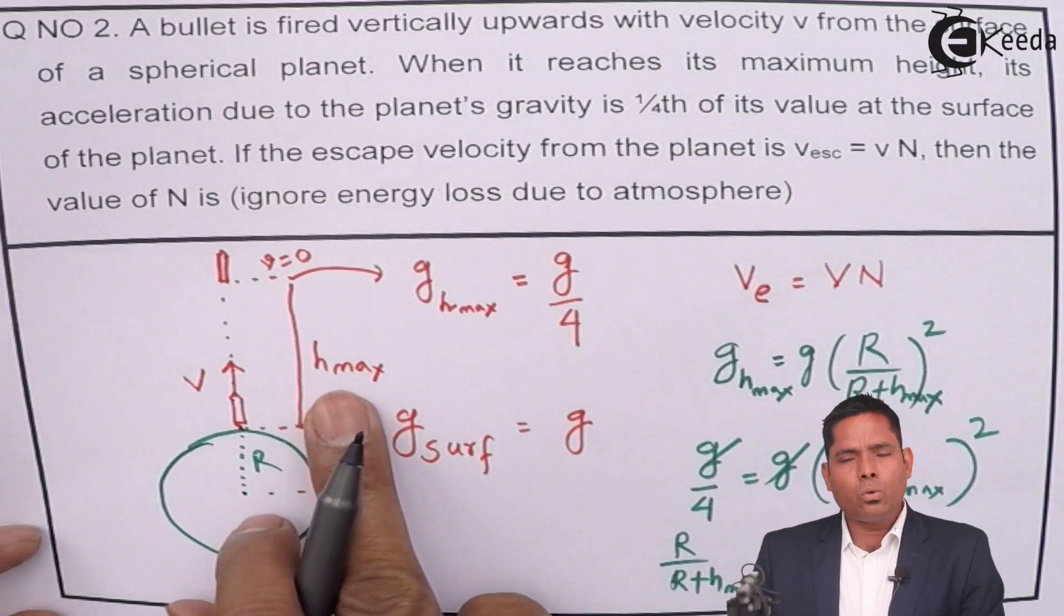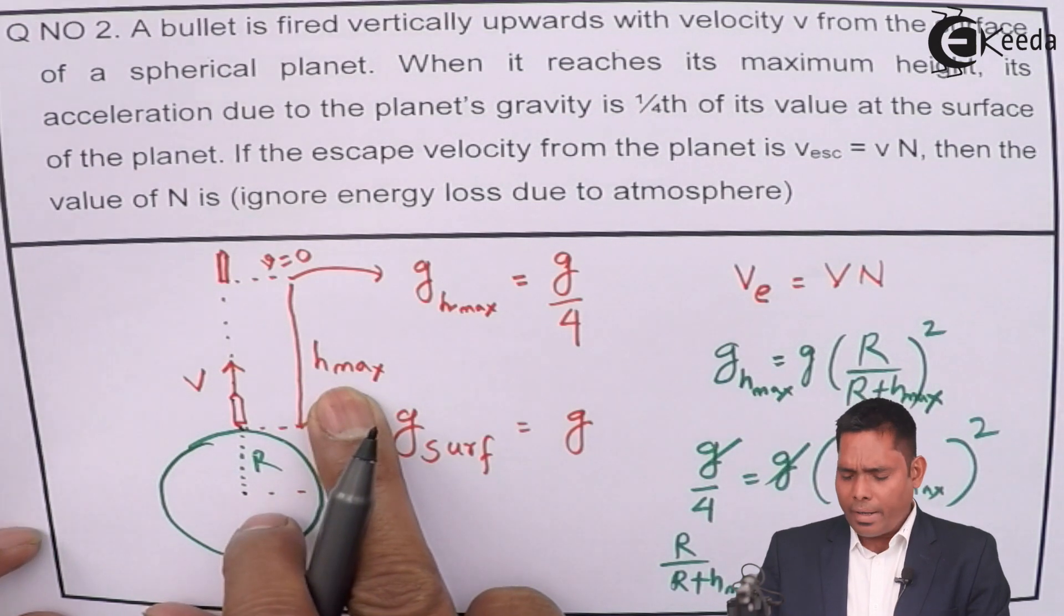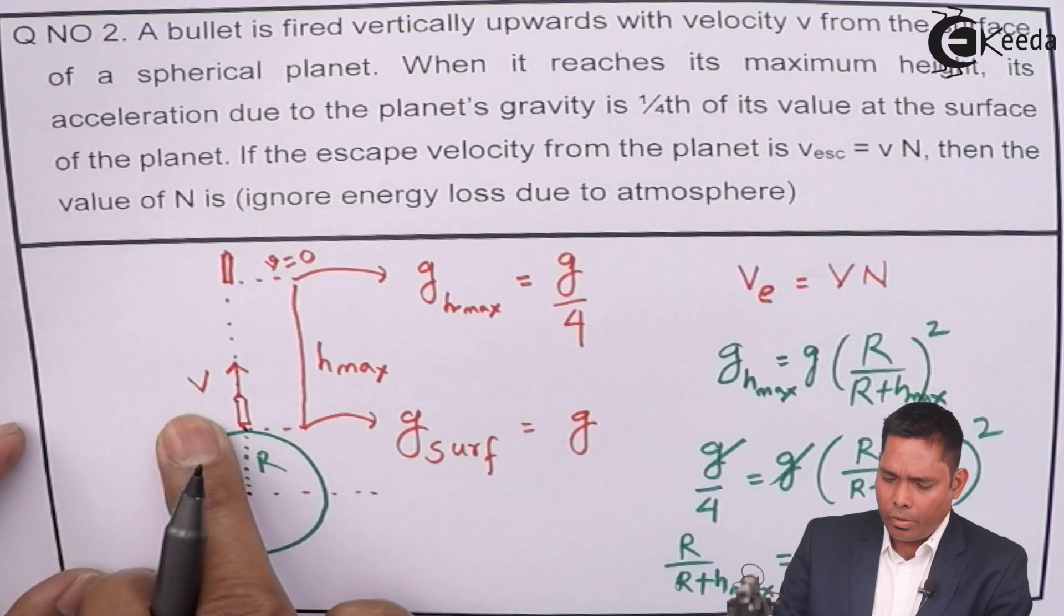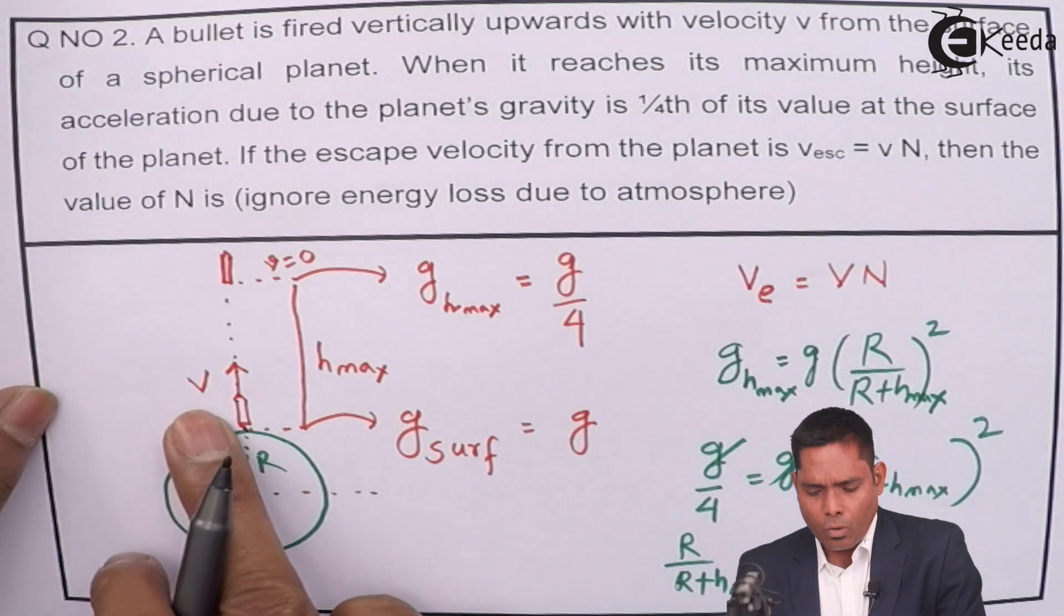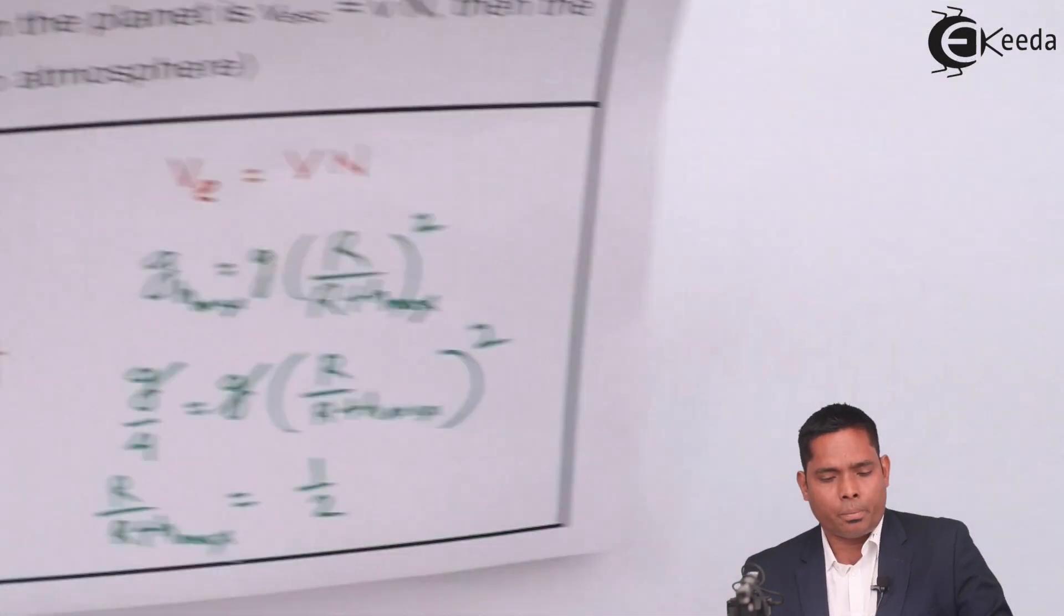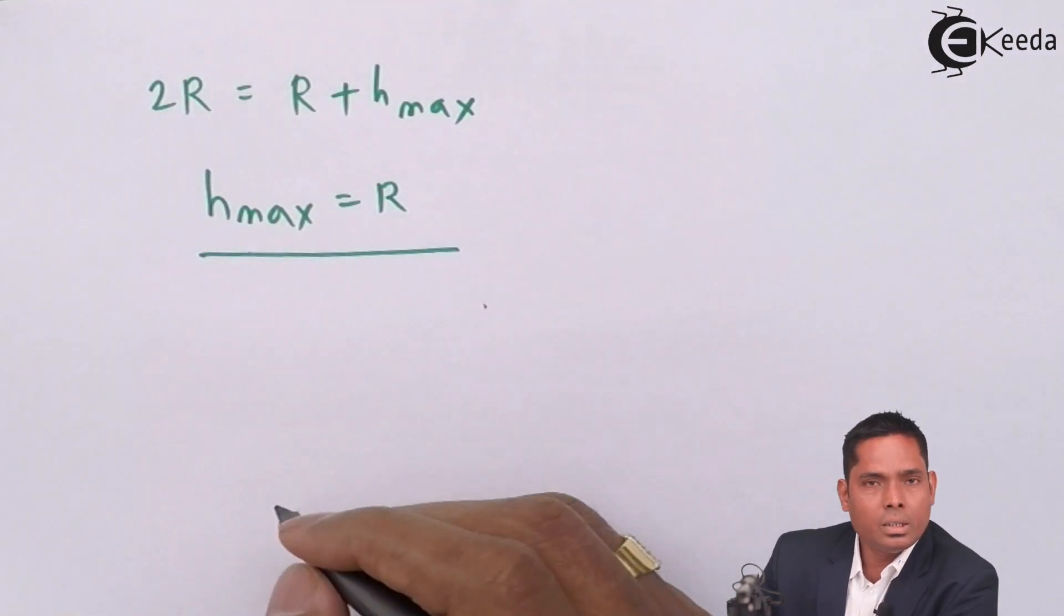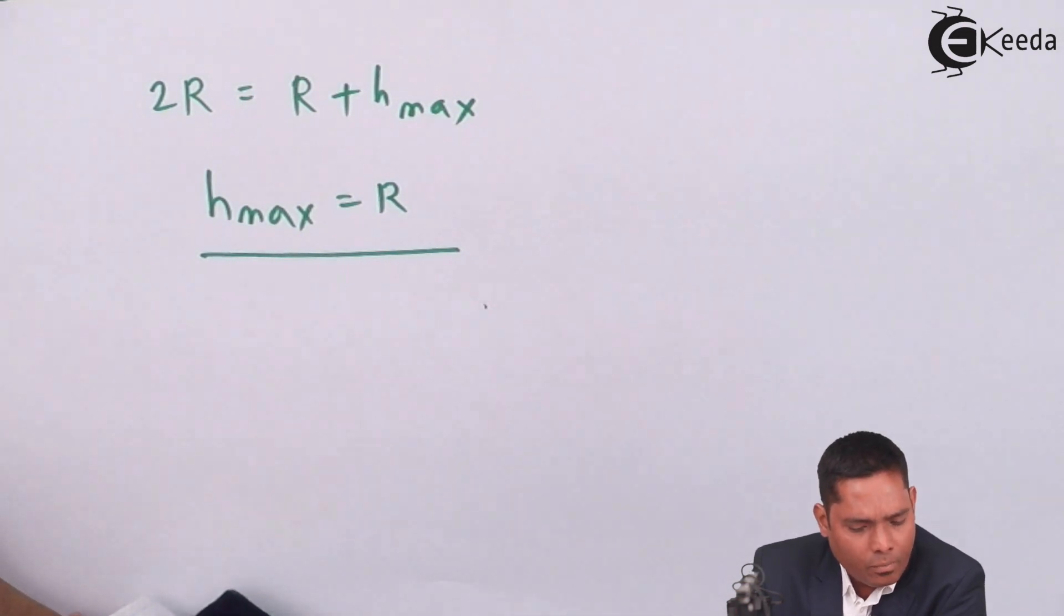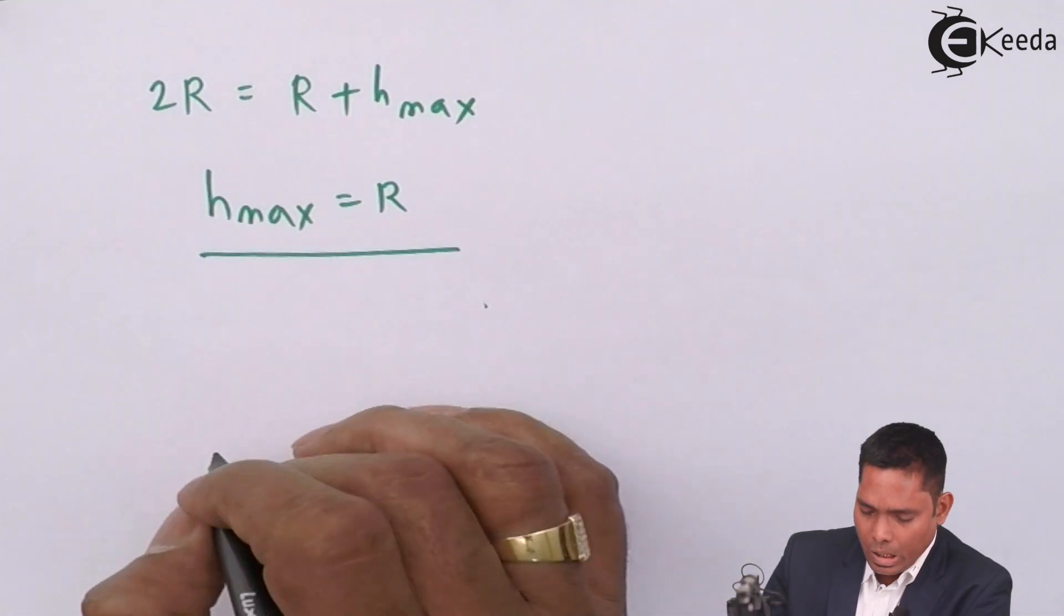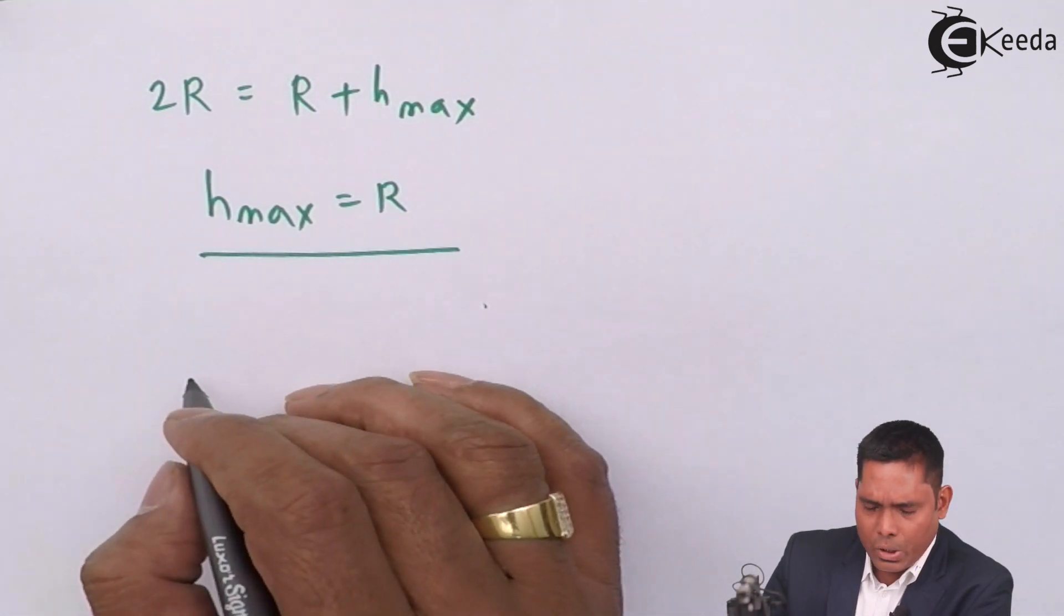As we got the value of h, we will find the velocity. If it is fired with V, what is the orbital velocity or the velocity with which it is fired? The escape velocity is √2 × √(GM/R).